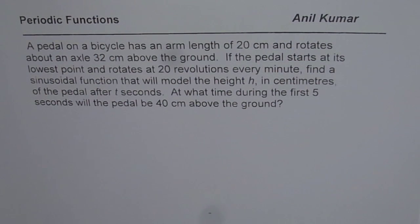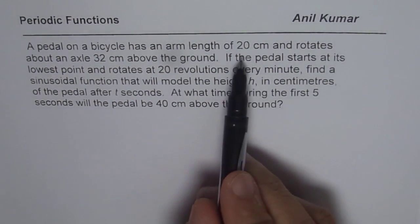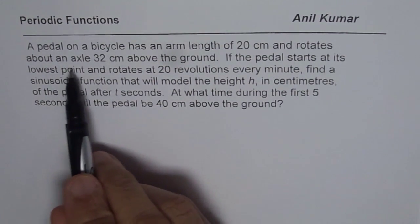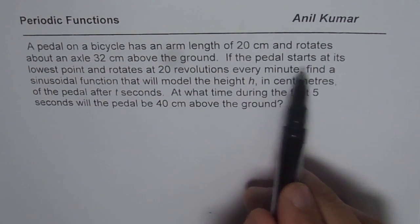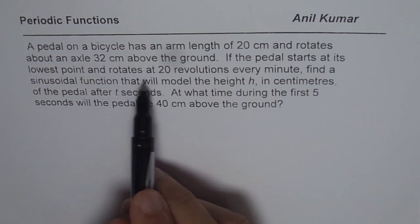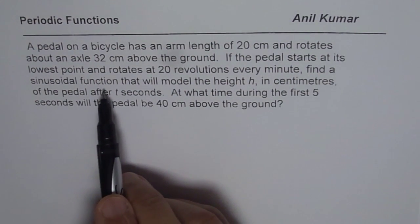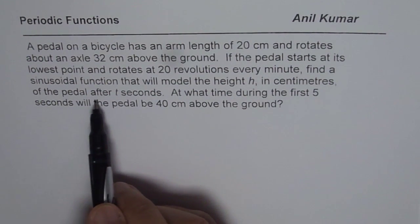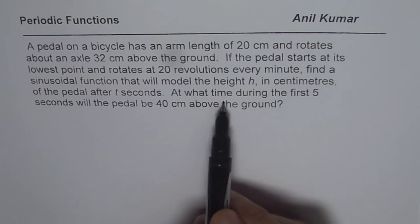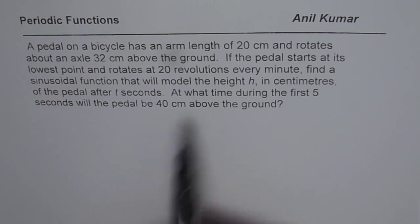I'm Anil Kumar and here is a very important question on periodic functions. A pedal on a bicycle has an arm length of 20 cm and rotates about an axle 32 cm above the ground. If the pedal starts at its lowest point and rotates at 20 revolutions every minute, find a sinusoidal function that will model the height h in cm of the pedal after t seconds. At what time during the first 5 seconds will the pedal be 40 cm above the ground?